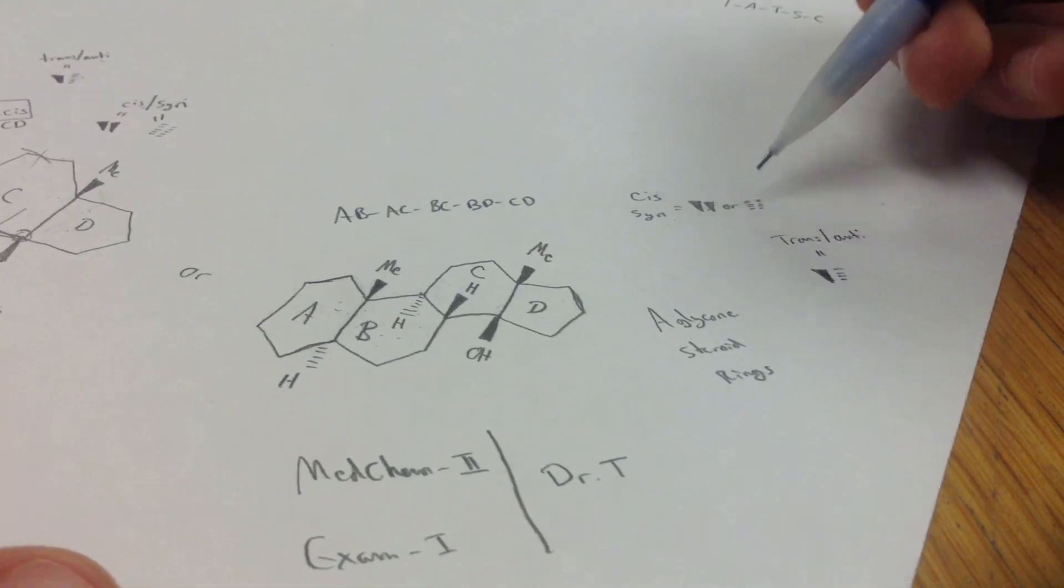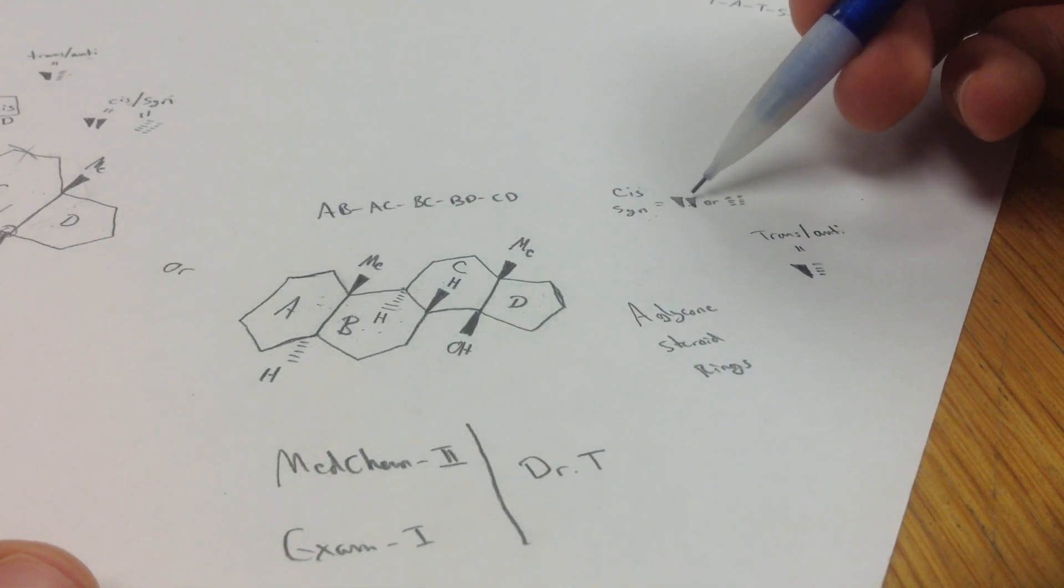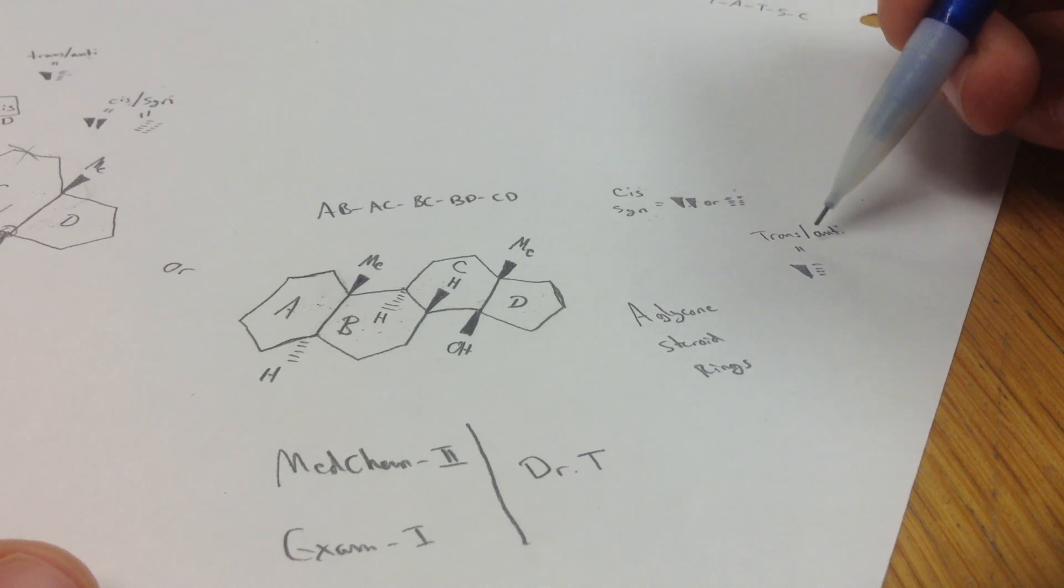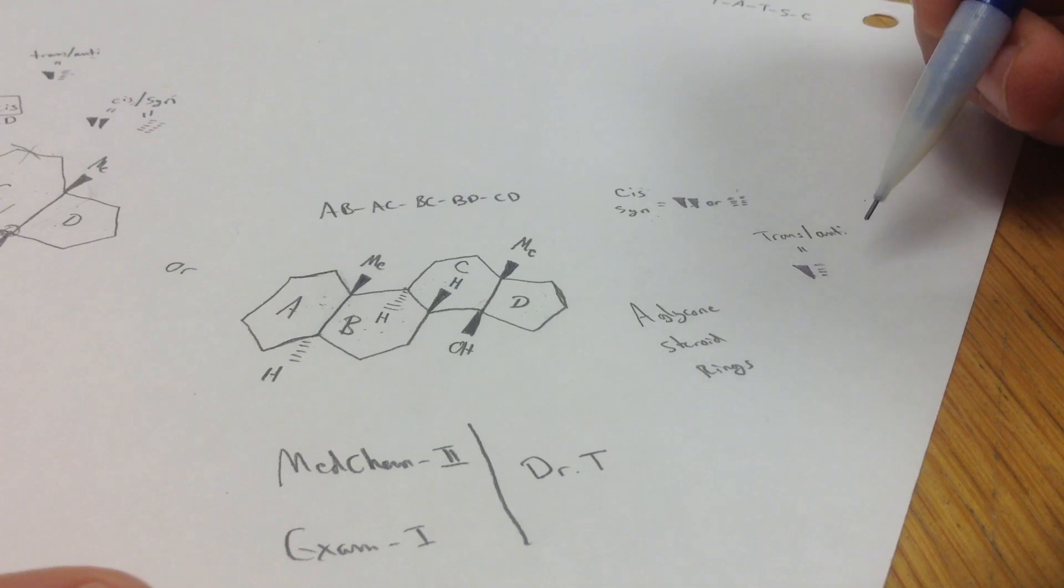And these are the things you look for. For cis, it would be two similar bonds, either shaded or dashed, and trans would be two opposite bonds.